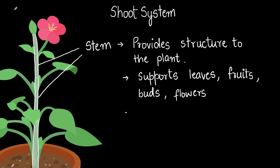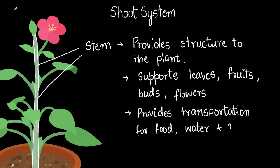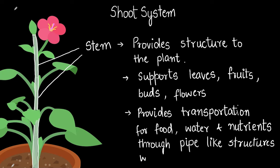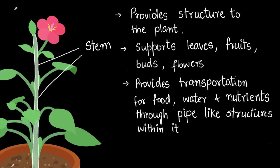The stem is also important for transportation. It provides transportation for food, water, and nutrients through a pipe-like structure that lies inside the stem, and that's what helps transport all these things. The stem also stores nutrients. A nice example where the stem stores nutrients is a potato — the potato is actually a stem which stores nutrients.